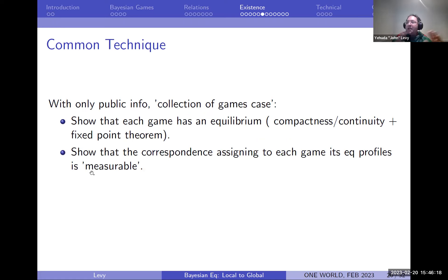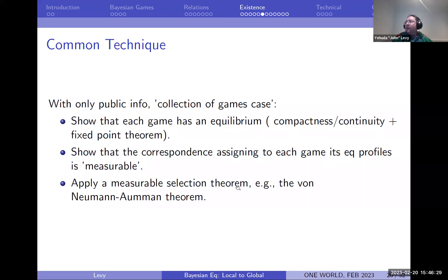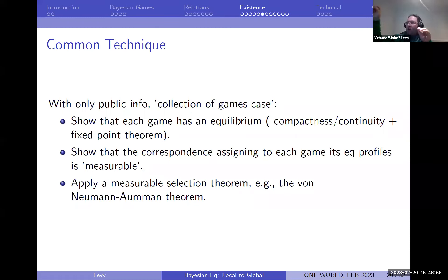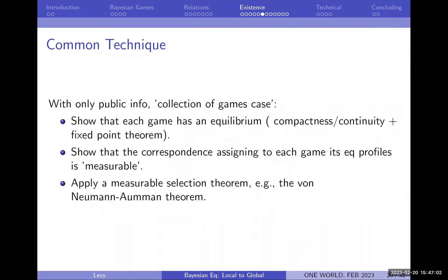What would be a common technique in the collection-of-games case? First show each game has an equilibrium using whatever compactness and continuity assumptions apply. Then show the correspondence assigning to each game its equilibrium profile is measurable in some sense — Borel graph, analytic graph, or something. Then apply a measurable selection theorem like the von Neumann–Aumann theorem: if you have a correspondence between nice spaces satisfying certain niceness, there is a function that selects one element from the correspondence that is measurable.